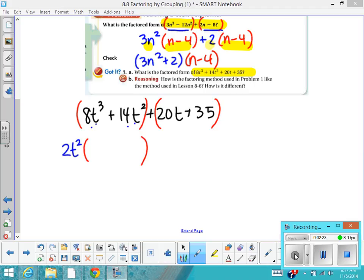And that's going to be times the quantity of... I think to myself, 2t² times what gives me 8t³, and that would be 4t + 7.